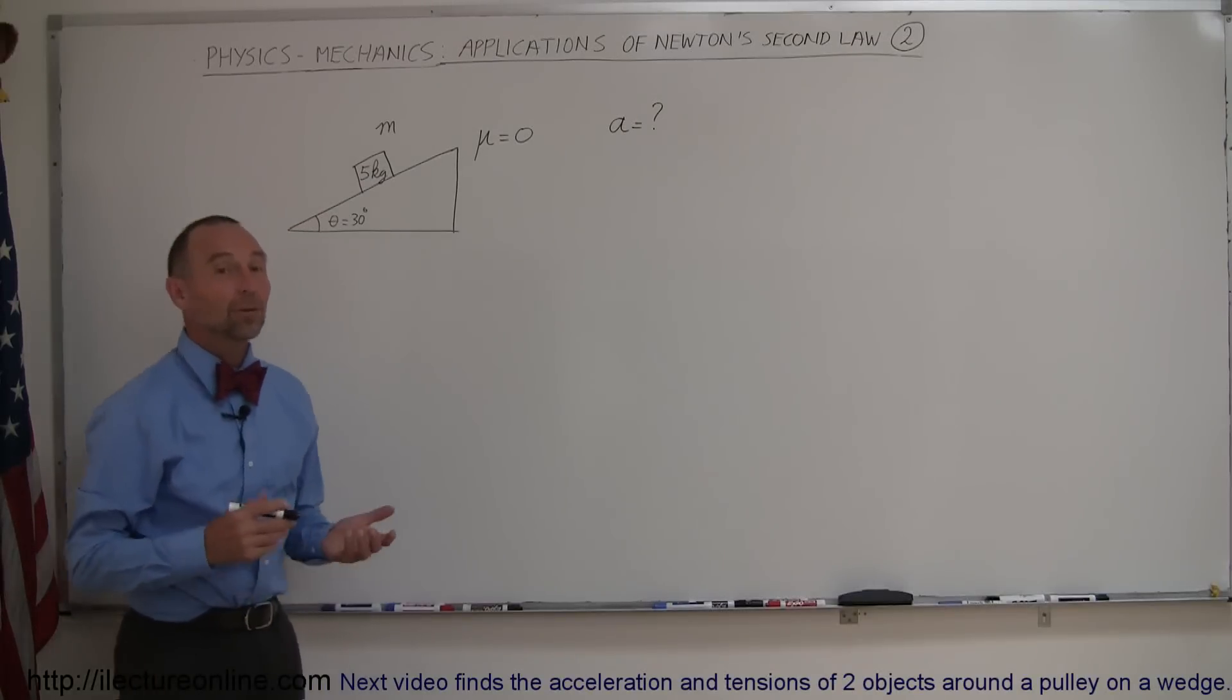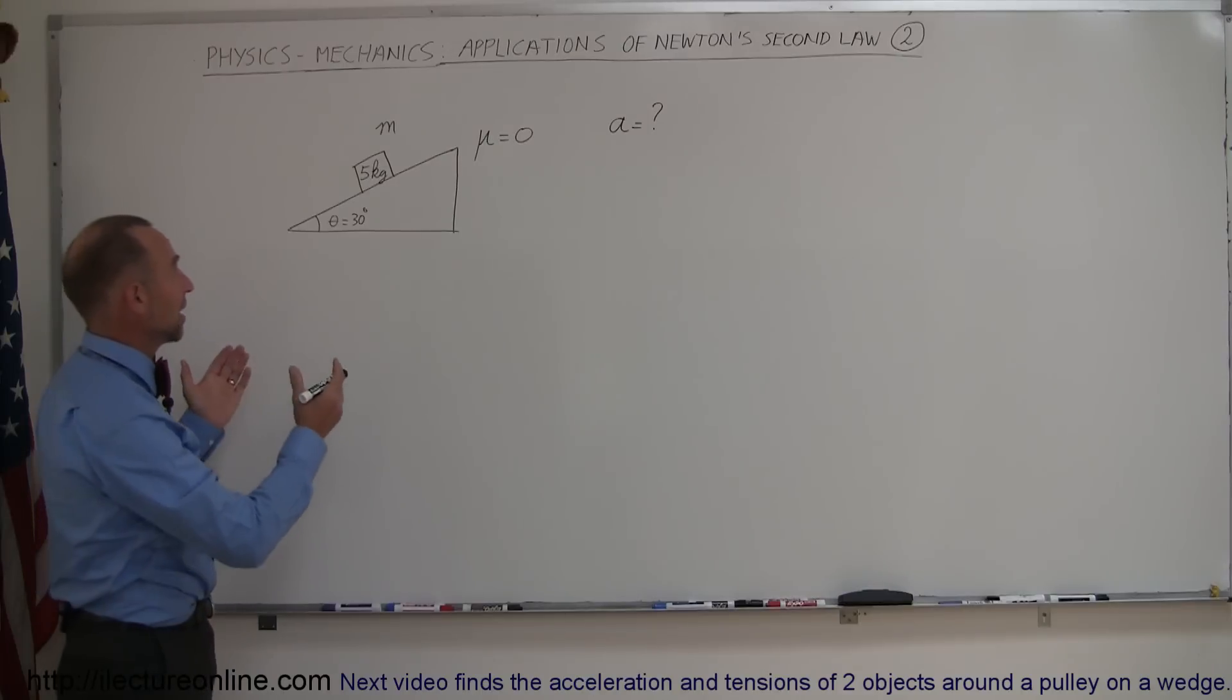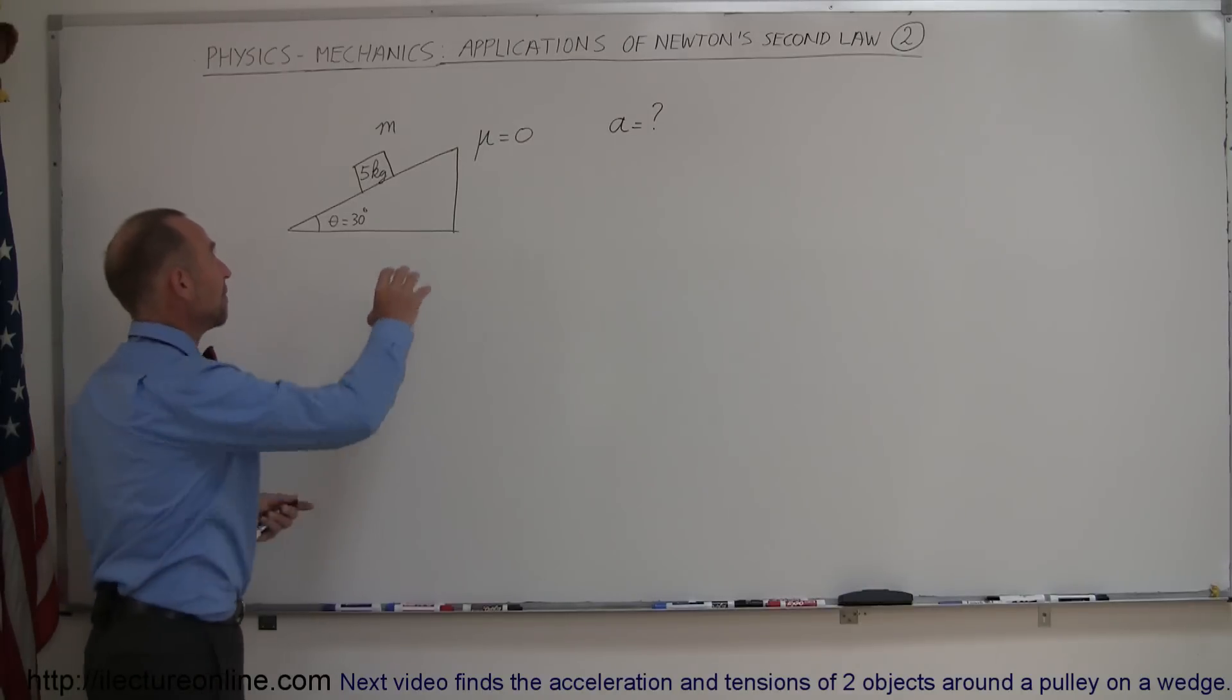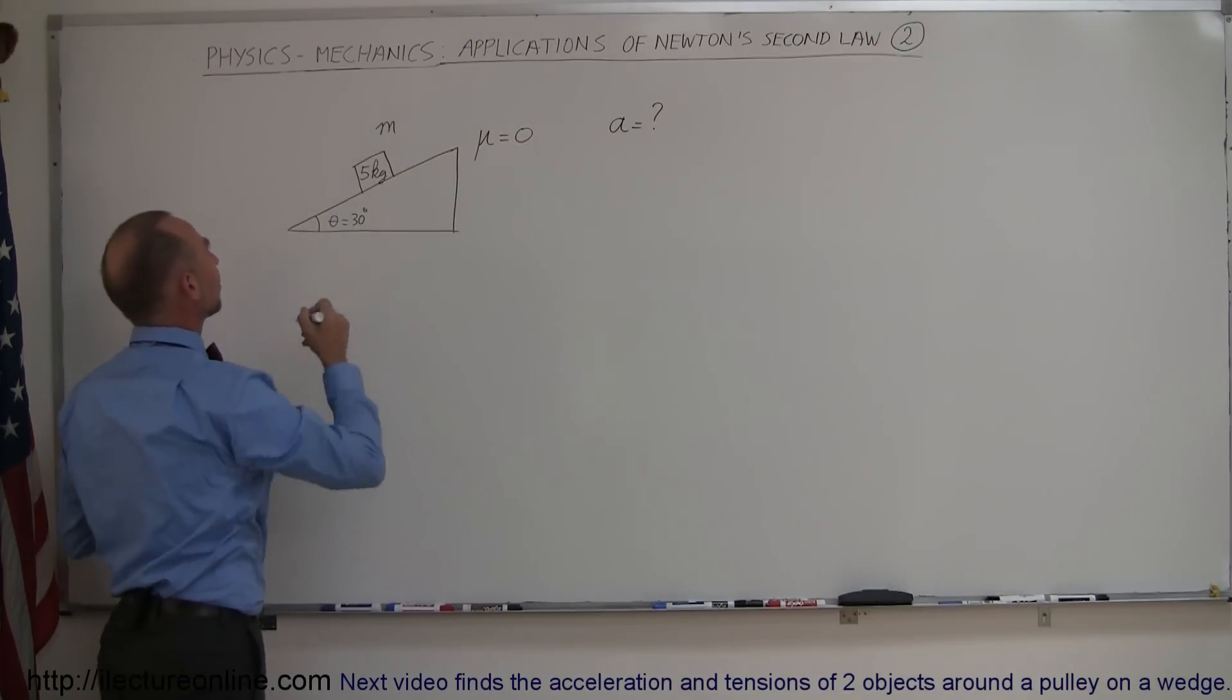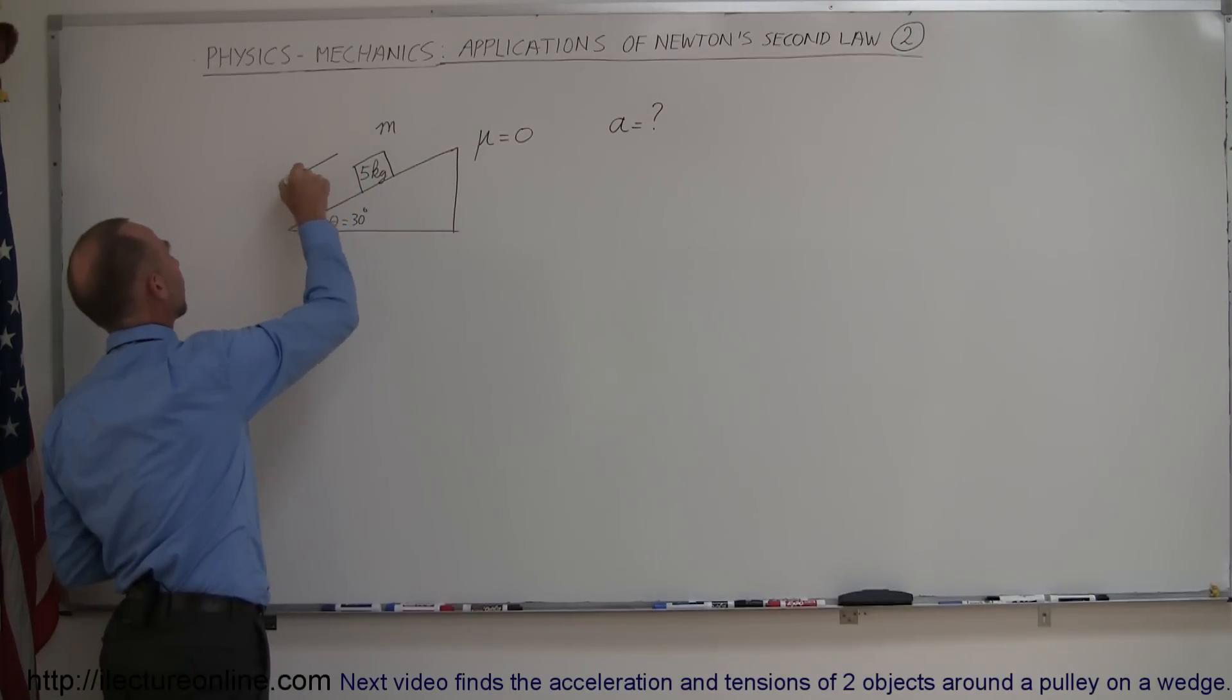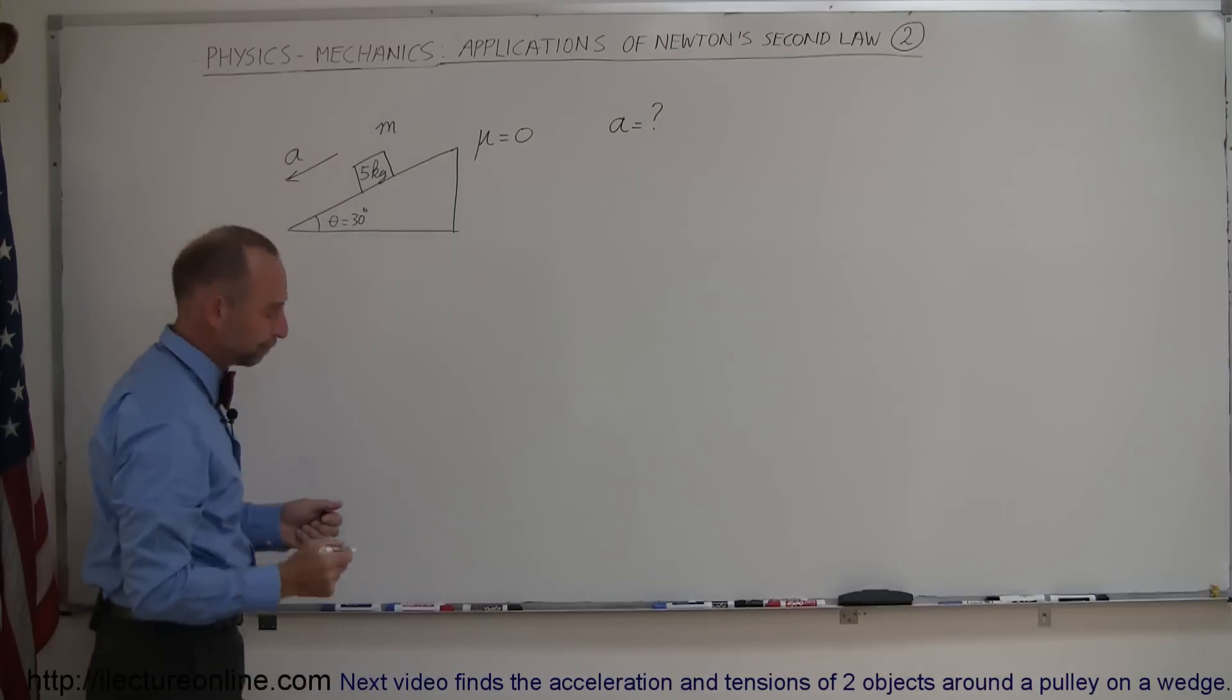In our second example of how to apply Newton's second law, we have an incline. We have a mass on top of the incline. There's no friction between the mass and the incline. And we want to know how fast this mass is going to be accelerating down the incline.